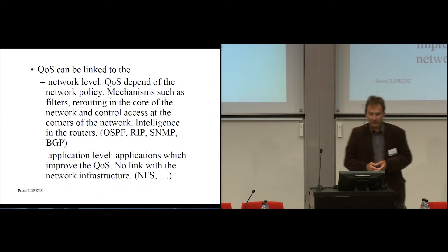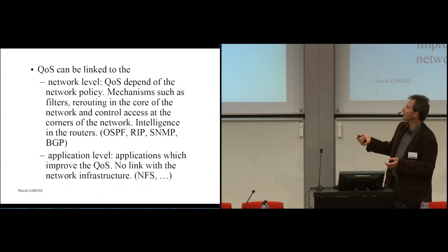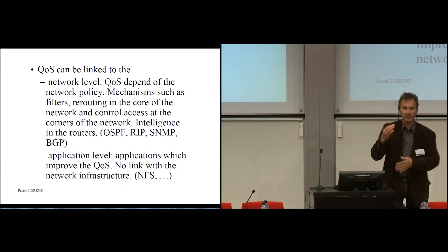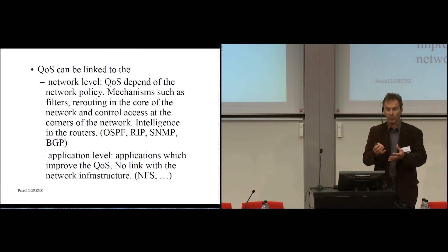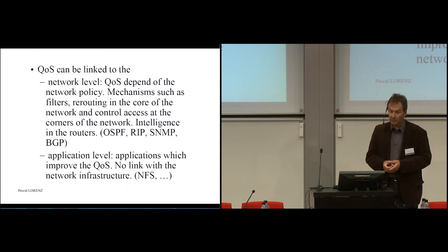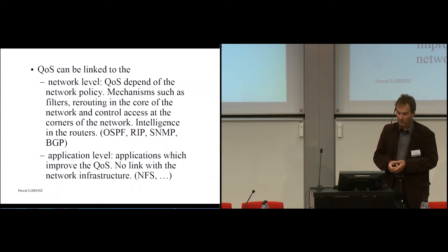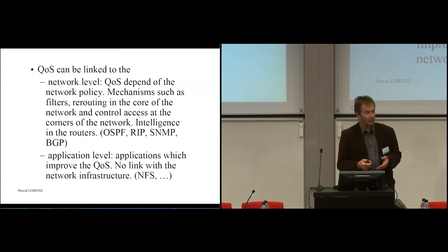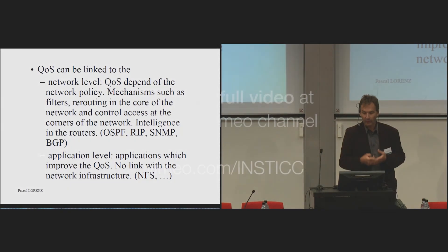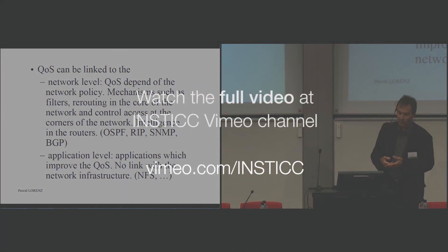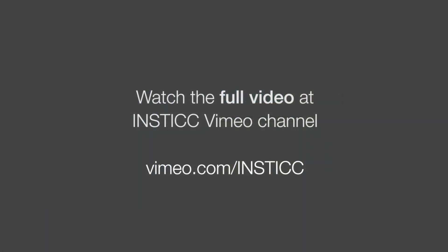The quality of service can be linked to two levels: network level and application level. These two levels can be used to offer quality. At the network level, the quality depends on the network policy. There are different mechanisms which can be used to offer quality, compatible with OSPF, RIP, SNMP, BGP, and so on. There is a mechanism in the core of the networks.